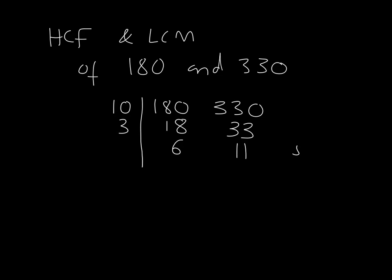And at this point we have to stop because 6 and 11 do not have any further common factors. Drawing in this line here to rule off. Then the HCF is equal to 10 multiplied by 3, which is 30.